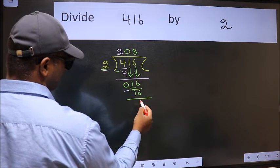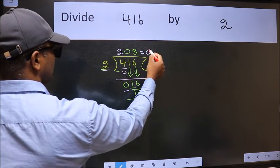Now we should subtract. We get 0. So this is our quotient.